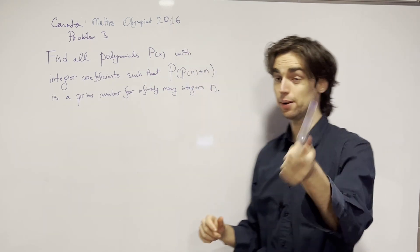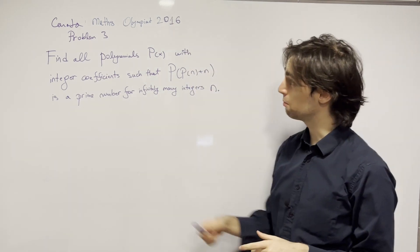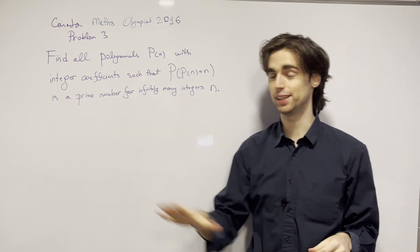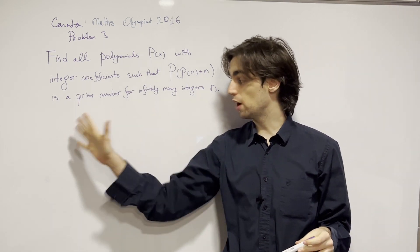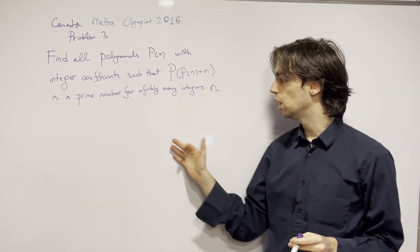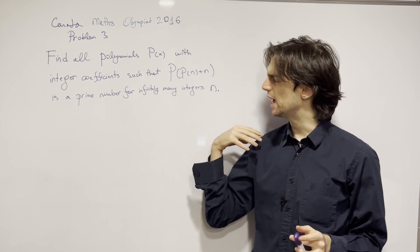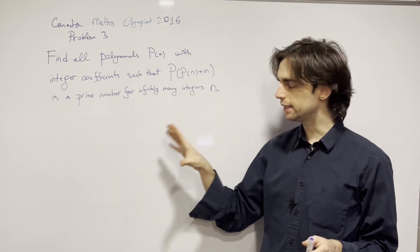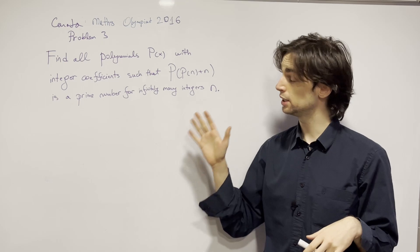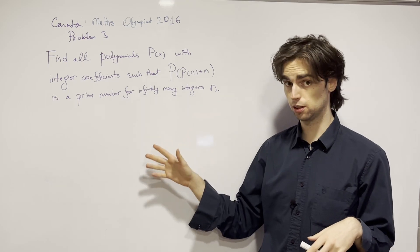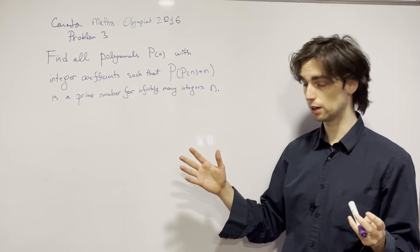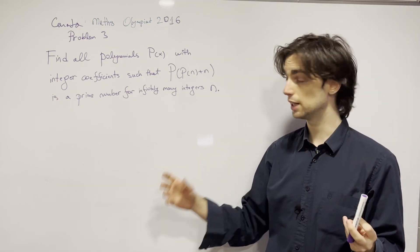Hello fellow problem solvers! We're going to be doing a problem from the Canada Math Olympiad 2016, problem number 3. You should try this number theory problem out for a minimum of 20 minutes, ideally an hour to an hour and a half, not more than 3 hours. If you'd like to go along with us, give it a go for the next 10 minutes. And now, without further ado, let's begin!